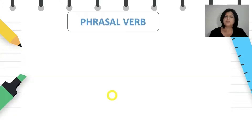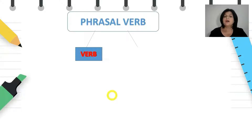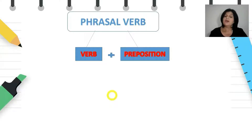First, what are phrasal verbs? Phrasal verbs are a combination of a verb and a preposition.